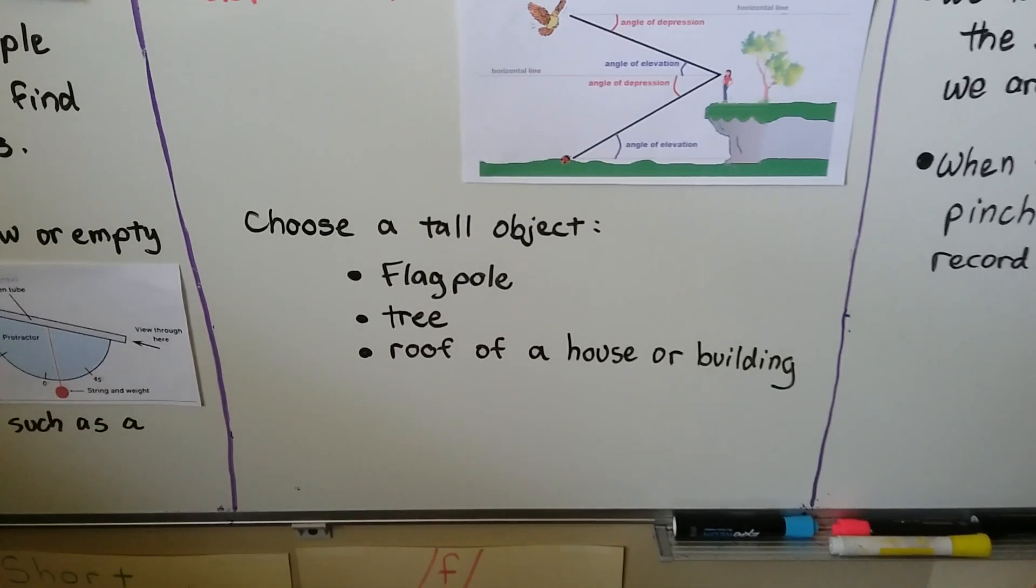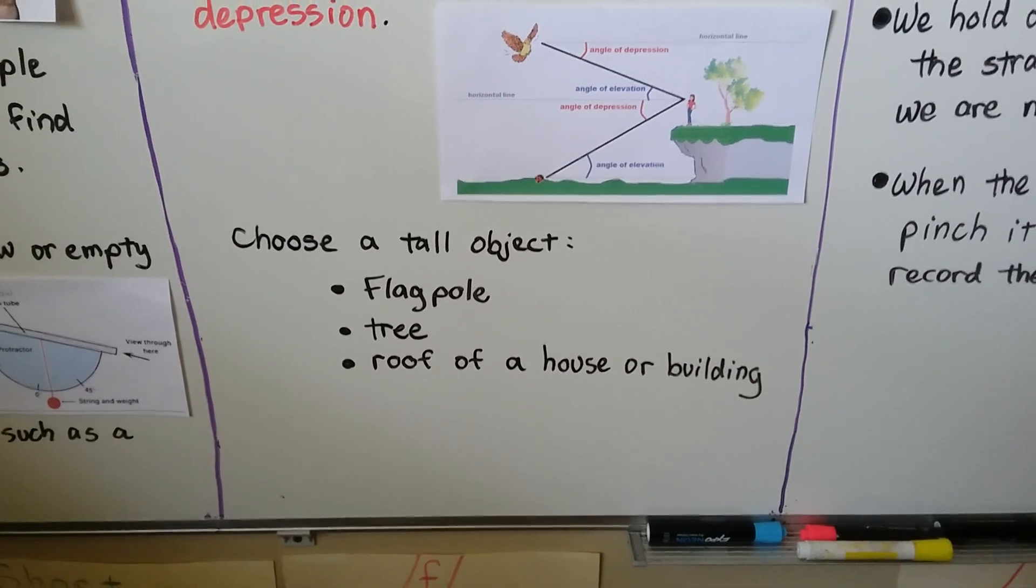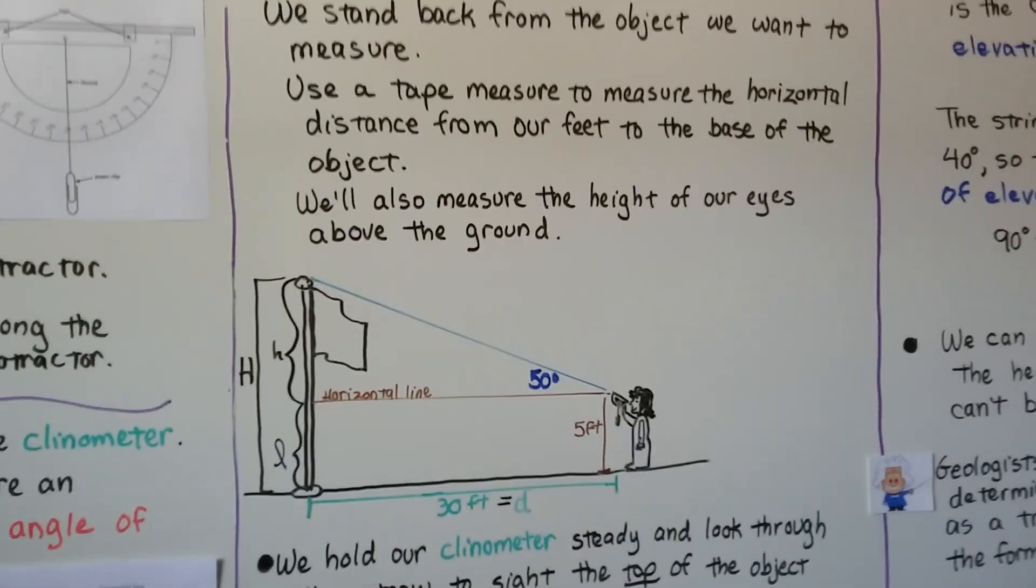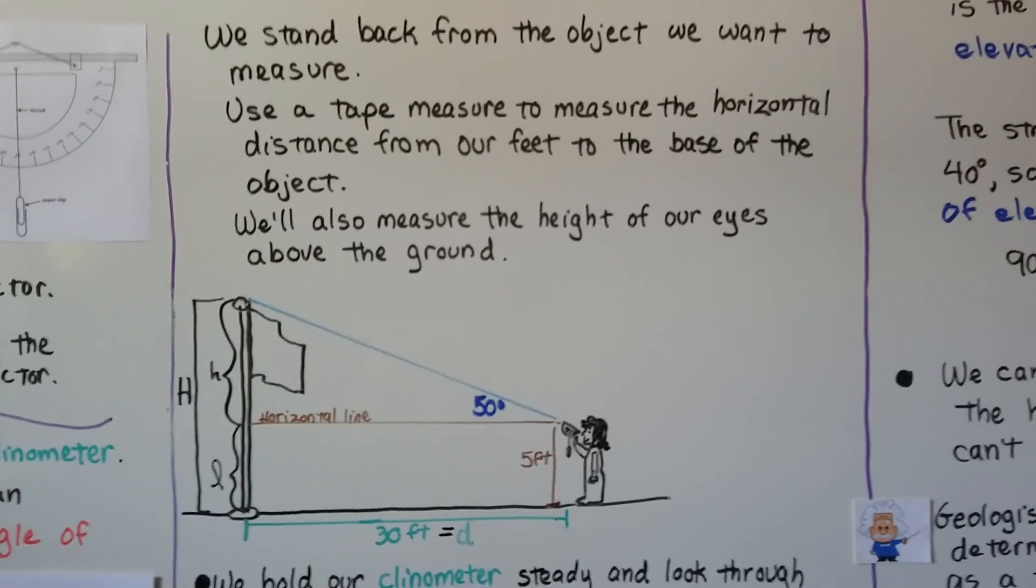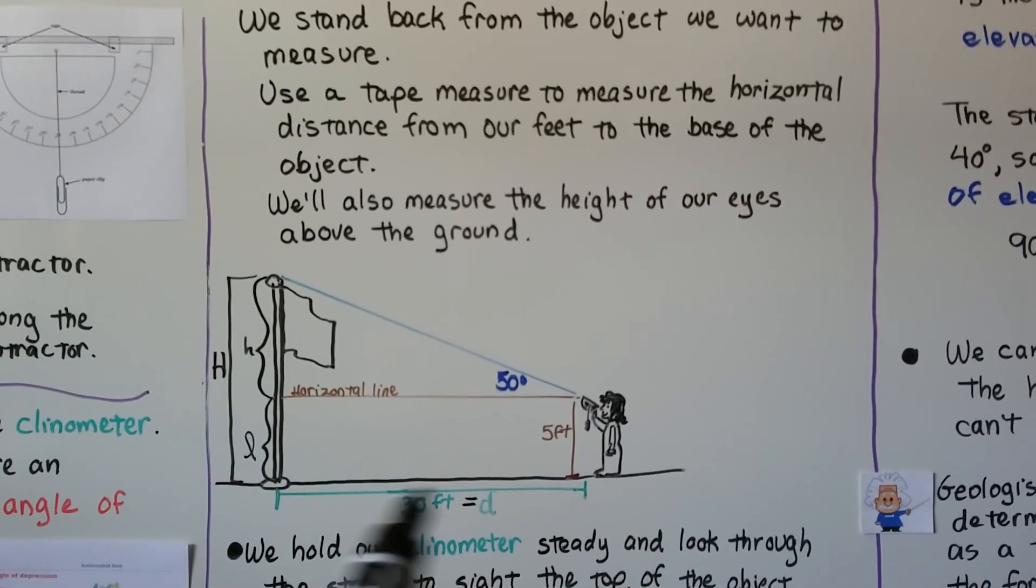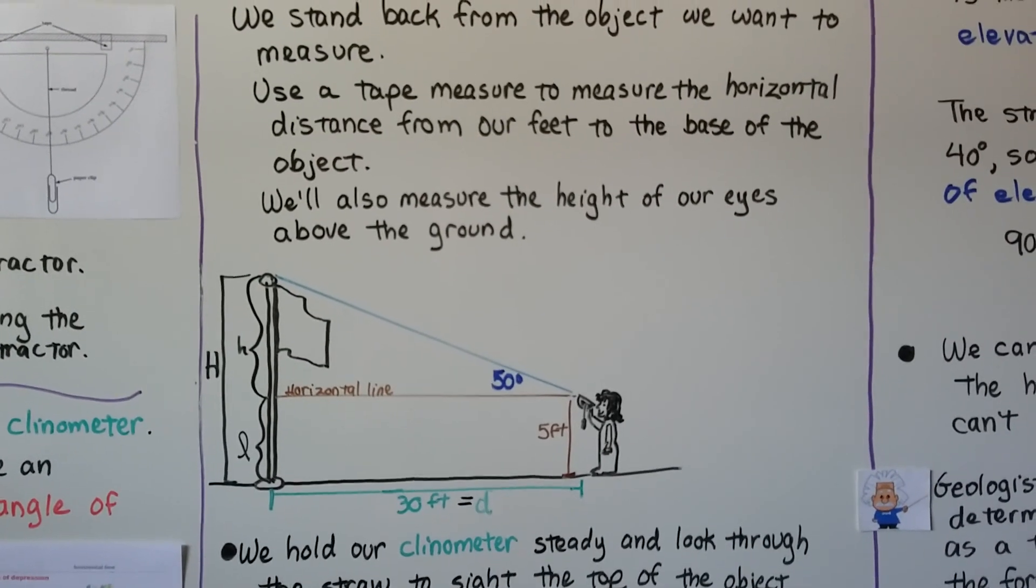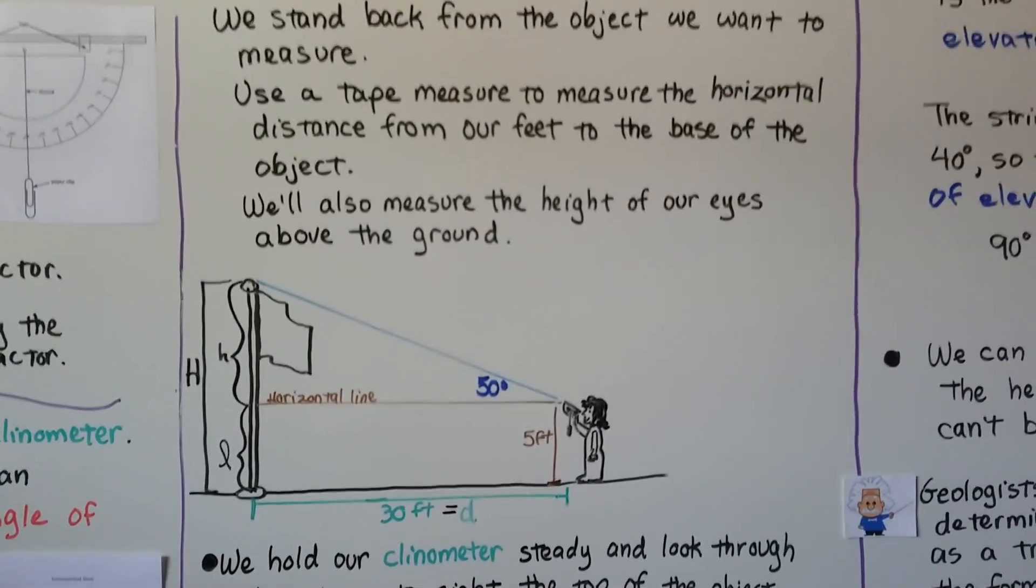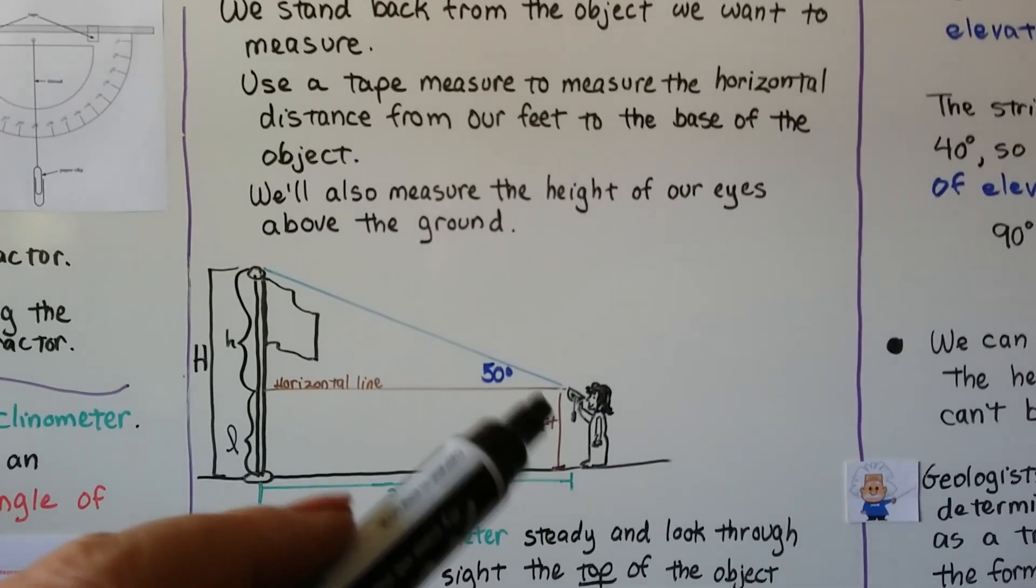So choose a tall object like a flagpole, a tree, or the roof of a house or a building. We stand back from the object we want to measure and we use a tape measure or some type of measure to measure the horizontal distance from our feet to the base of the object. We also measure the height of our eyes above the ground.